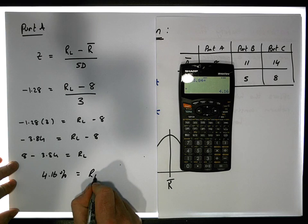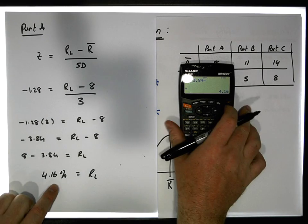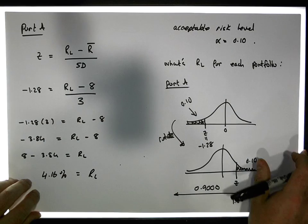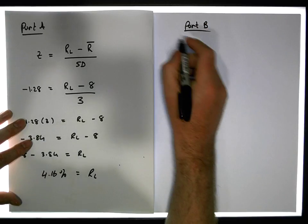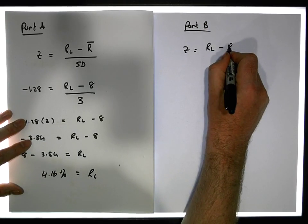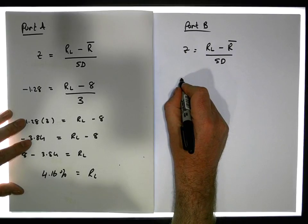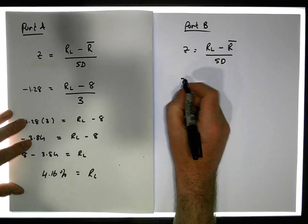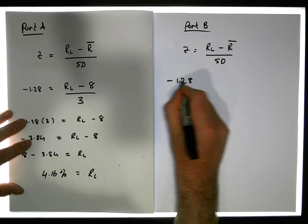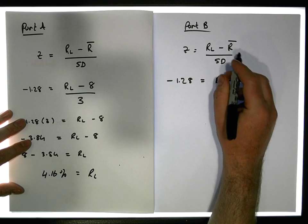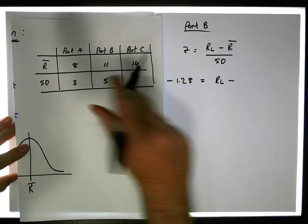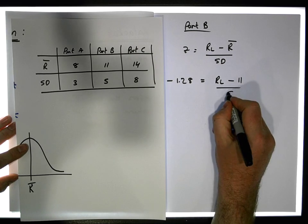So 4.16% equals RL — that is our minimum return threshold for Portfolio A. Now for Portfolio B, what is this minimum threshold value that has 10% of the area to the left-hand side of it? For Portfolio B, z equals RL minus its expected return divided by its standard deviation, and z is minus 1.28. We want to find the minimum return, and the expected value is 11% with a standard deviation of 5.